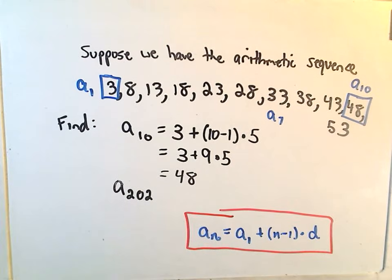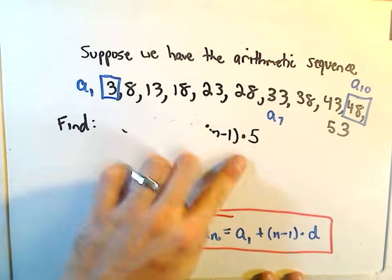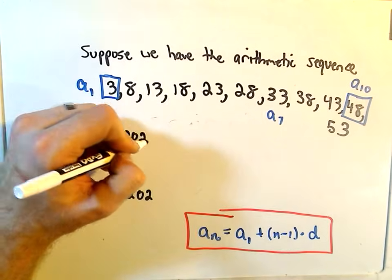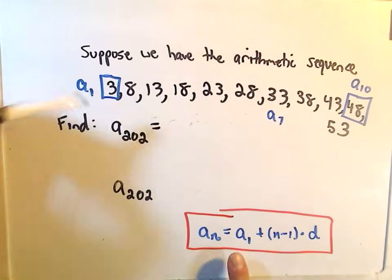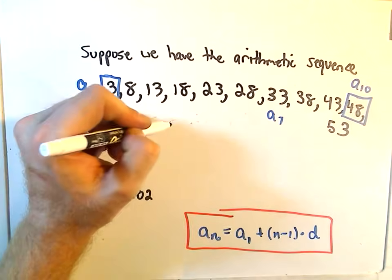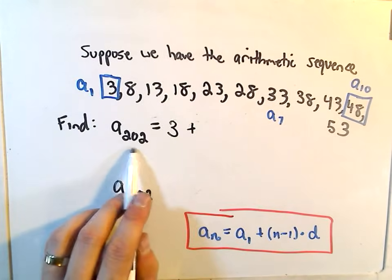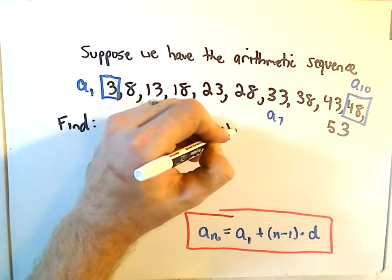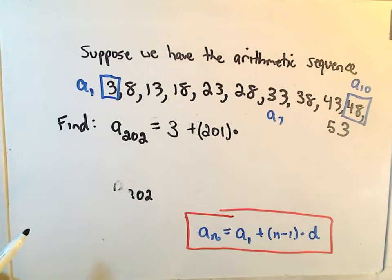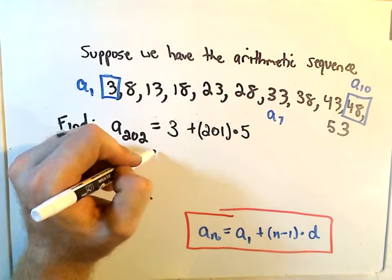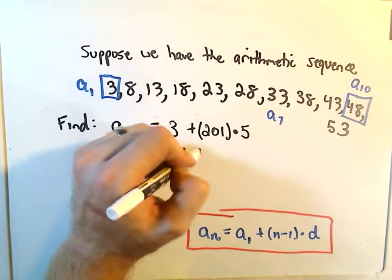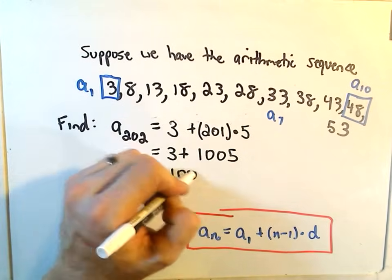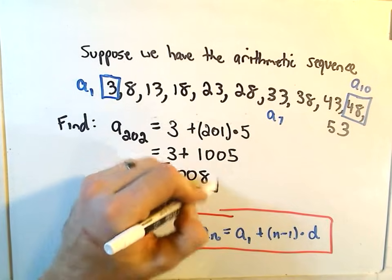So obviously, a_202 here, you wouldn't want to write this one all the way out. Maybe you would. Maybe you're a masochist. I wouldn't want to. Again, it says just take the first term, which is 3, plus, we subtract 1 away from this number. So we'll take 201. And again, we would just multiply that by our d value, which in this particular example we said is 5. So that's 3 + 1,005. So it looks like our 202nd term would be the number 1,008.